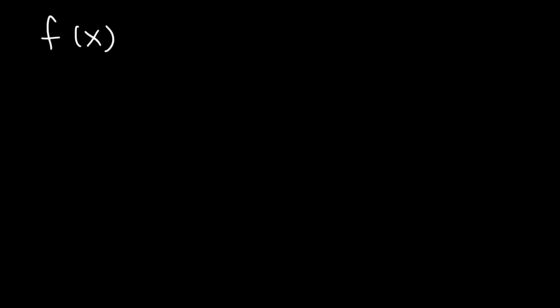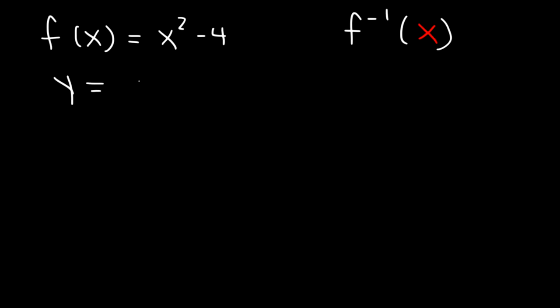Now let's try another example. Let's say f of x is equal to x squared minus 4. Go ahead and determine the inverse function — feel free to pause the video. So first, let's replace f of x with y. Next, let's switch x and y. And then solve for the variable y.